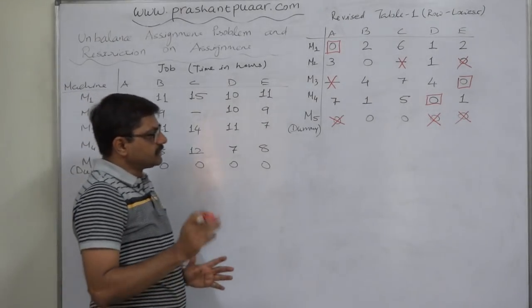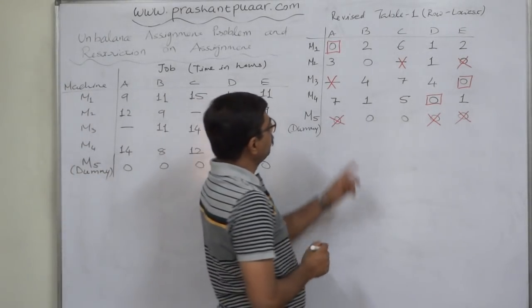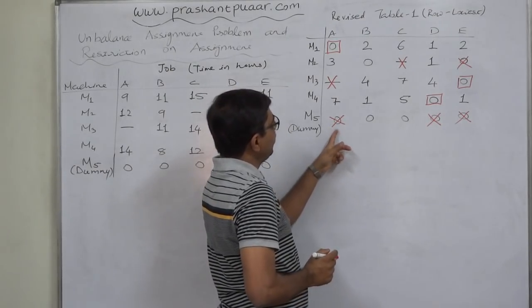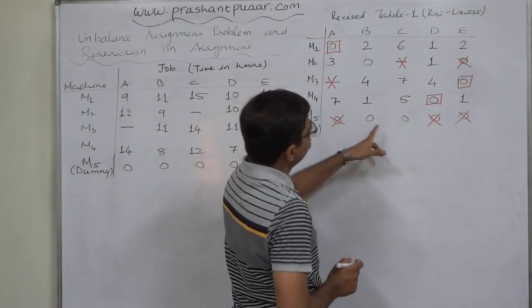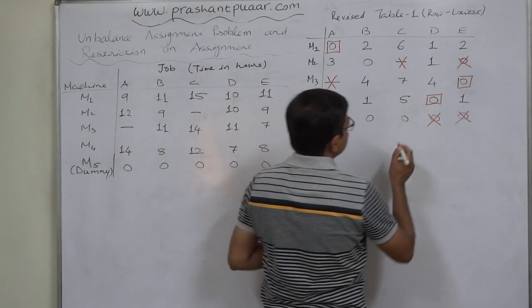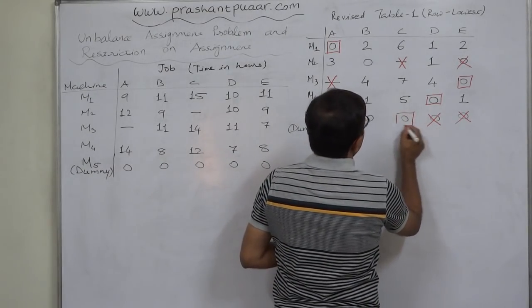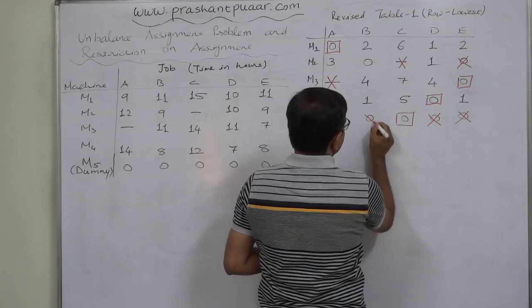Cancel all other zeros in the same column. Row M4 is also with single zero. We have to cancel this one. Now, this is turn of a column with single zero. Assignment already done in column A. In column B, there are two zeros. In column C, there is only one zero. So we have to cancel this zero.